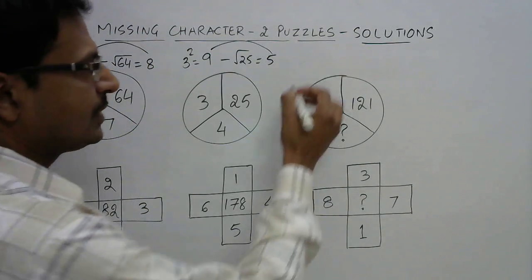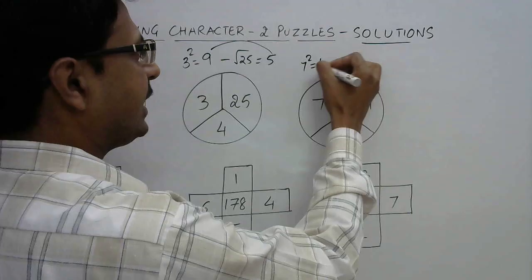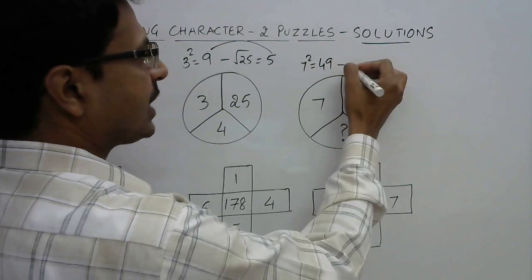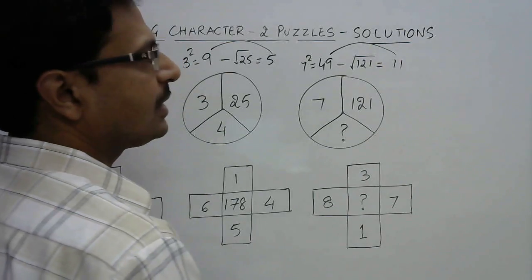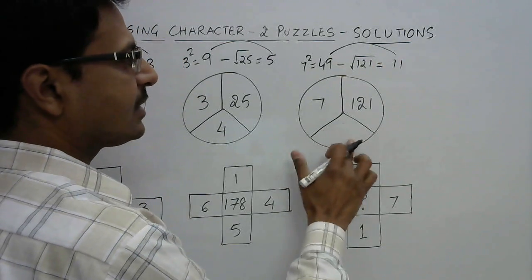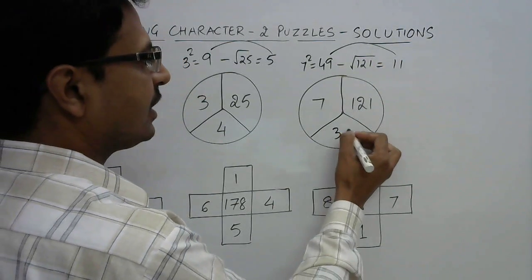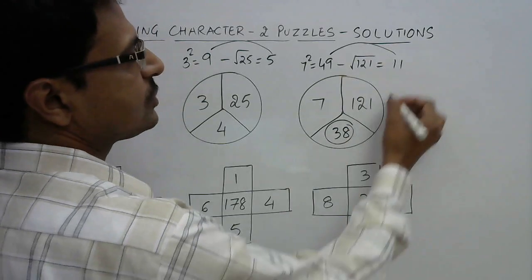And now we can apply this rule to get to our answer. 7 square is 49, and we need to subtract square root of 121 which is 11. So 49 minus 11 gives you the answer in this place.